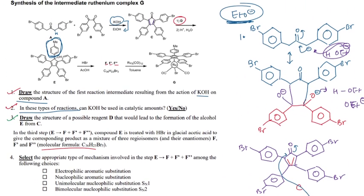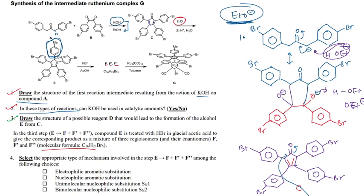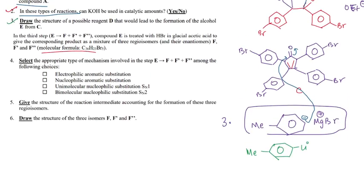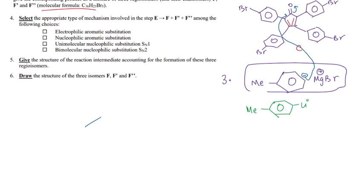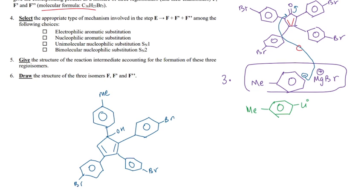In the third step, E to F plus F' plus F'', compound E is treated with HBr in glacial acetic acid to give the corresponding product as a mixture of 3 regioisomers and their enantiomers. Let's try to figure out what happens. C right here, let me draw that out a bit bigger. There is the toluene substituent we're talking about. Here is a 5-membered ring, and they have double bonds right here. There is an OH right here, and there are all these bromophenyl or bromobenzyl rings attached.